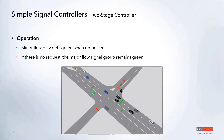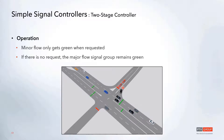For the two-stage controller, both directions of the major flow are green and will stay green until the minor flow requests a call. A detector is placed for the minor flow, and once the minimum green time has elapsed for the major flow and we've gone through any yellow time and clearance time, the minor flow will get its call.